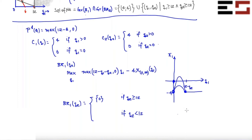What if the graph looks like this — with the peak above zero? We need to figure out whether zero is the global maximum or whether the interior peak is. The peak is at the same point as the previous problem: q1 = (12 minus q2) / 2. So I need to compare: what is my profit at q1 = 0, and what is my profit at q1 = (12 minus q2) / 2? I choose whichever gives higher profit.